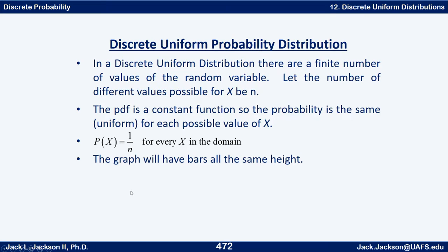In a discrete uniform distribution there are a finite number of values of the random variable. The number of different values for x, let's say it's n. The PDF is a constant function so the probability is the same — uniform — for each possible value of x. Either it's 0 or it's all the same, which is 1 over n.